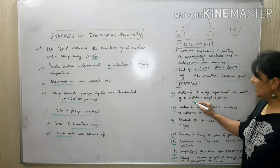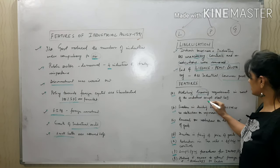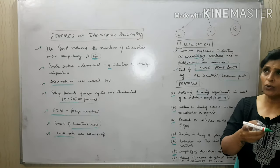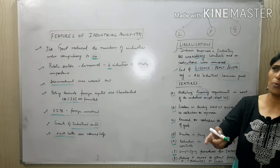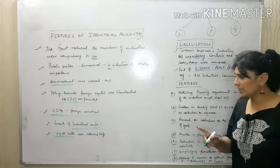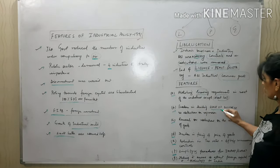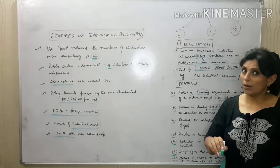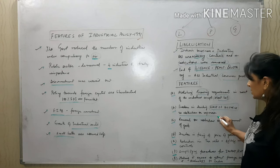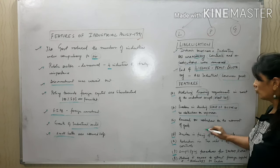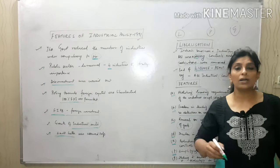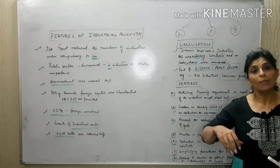The features of liberalization include: abolishing licensing requirements in most industries except specific ones like alcohol, pharmaceuticals, and atomic energy. Freedom in deciding the scale of business — small businesses no longer needed permission to take a loan. Restrictions on the movement of goods were removed, including for interstate movement and for goods going abroad.